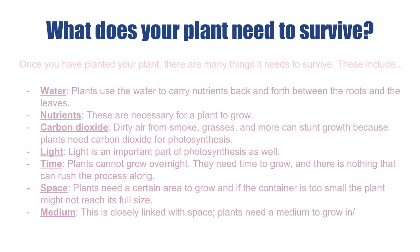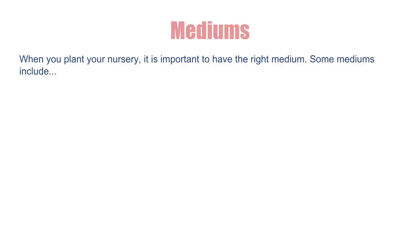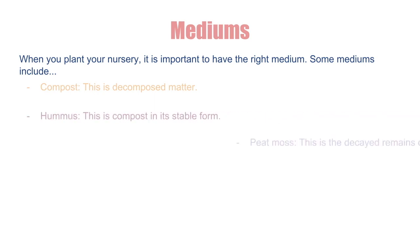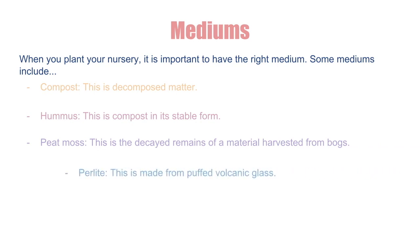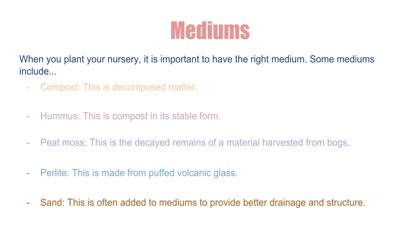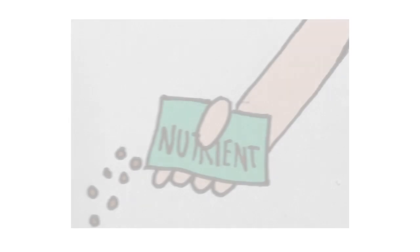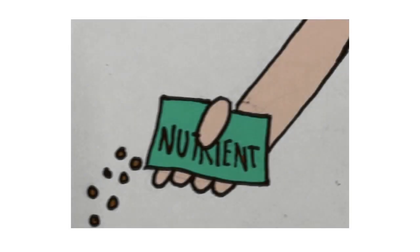Medium is closely linked with space because plants need a medium to grow in. When you plant your nursery, it is important to have the right medium. Some mediums include compost — decomposed matter; humus — compost in its stable form; peat moss — the decayed remains of a material harvested from bogs; perlite — often made from puffed volcanic glass; and sand, which is often added to mediums to provide better drainage and structure. Often companies add nutrients and other beneficial things, saving you the time of having to add these things yourself.